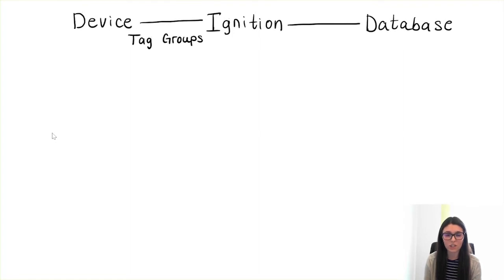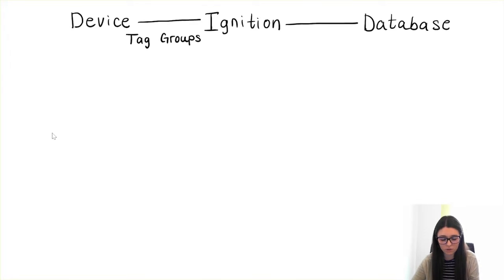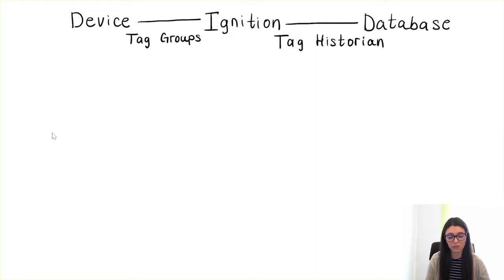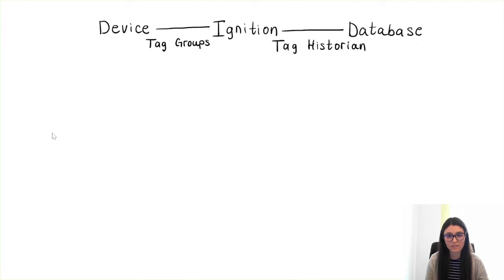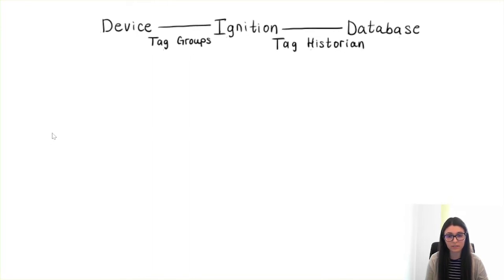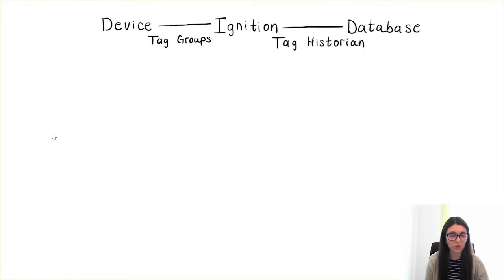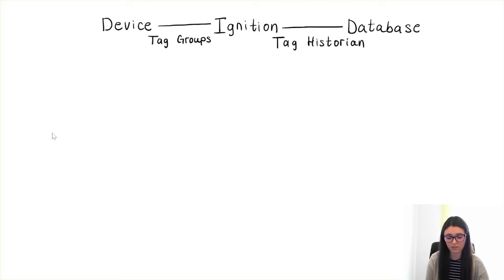Ignition has a defined strategy for storing historical data, which is called the tag historian. When we enable history on a tag in Ignition, the data is automatically stored from Ignition to the database. The structure and format of the stored data depends on the settings we choose in the tag historian. We want to store data in the most optimized way — fast access, efficient SQL queries, and a simple, efficient organization of the data. Choosing the right settings is a crucial step.